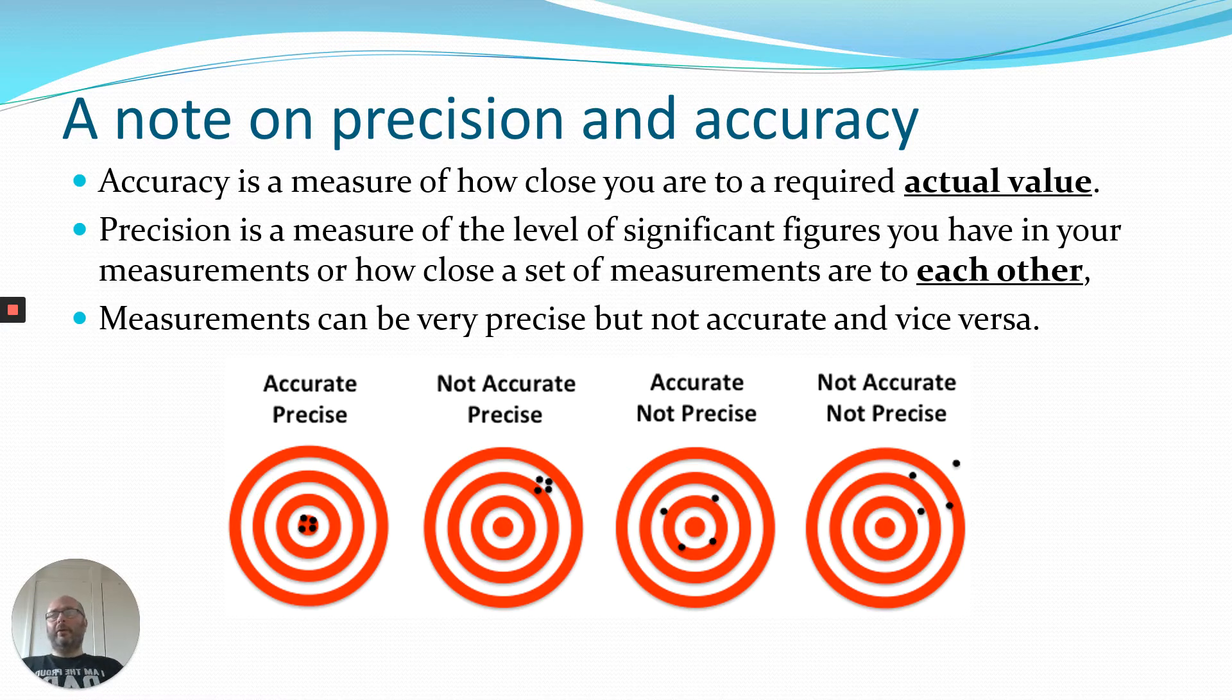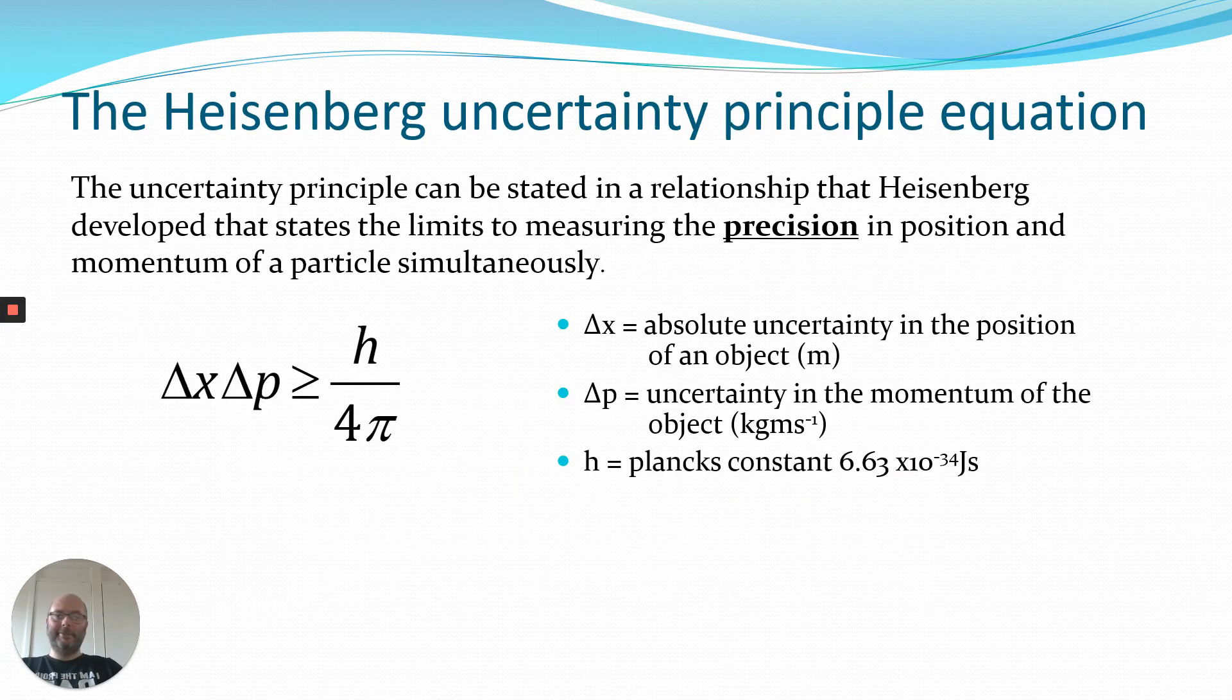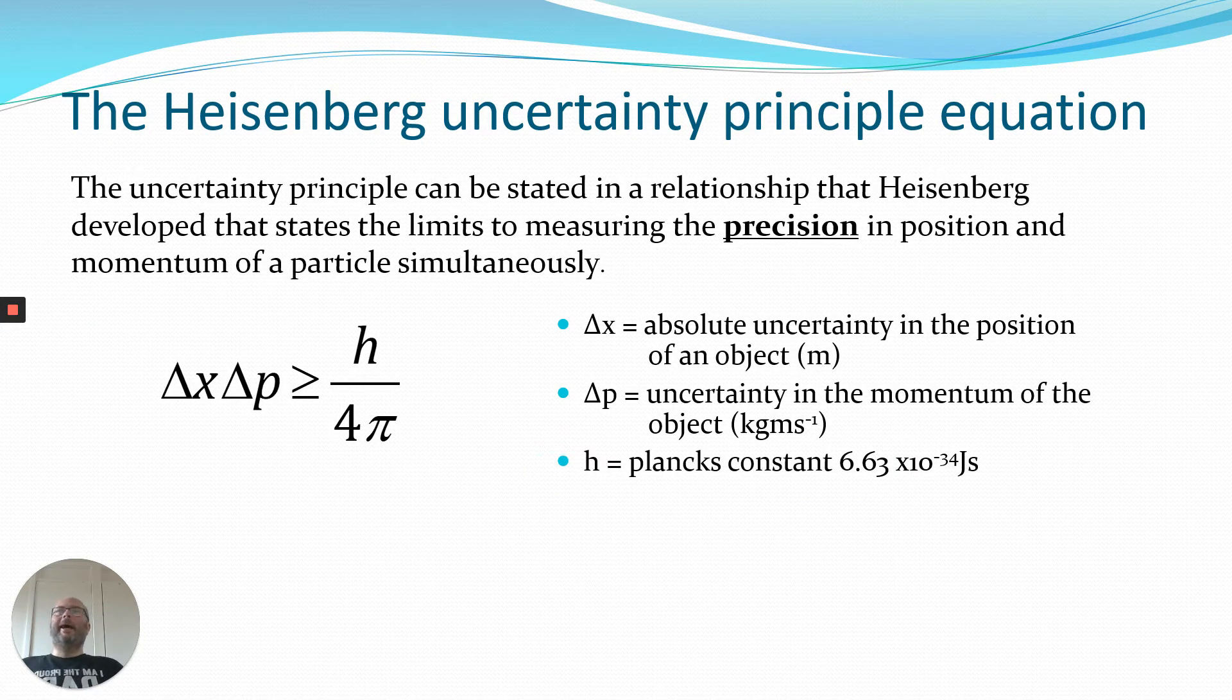So when we're doing an experimental measurement, then we may not get the value we're after, but if we're getting the measurements closer and closer together and getting closer and closer to a defined value, thinking precision, then this is where we can start to look at the Heisenberg uncertainty principle.